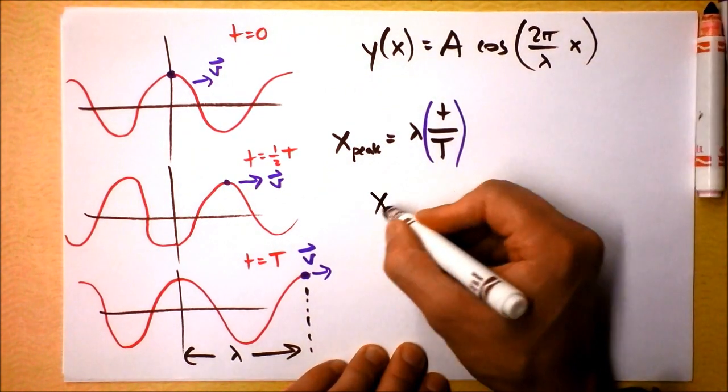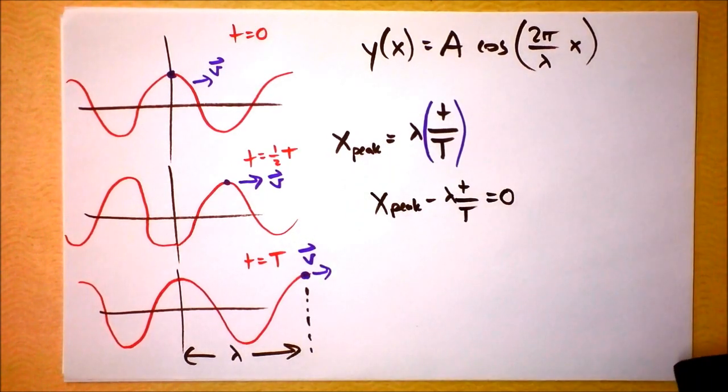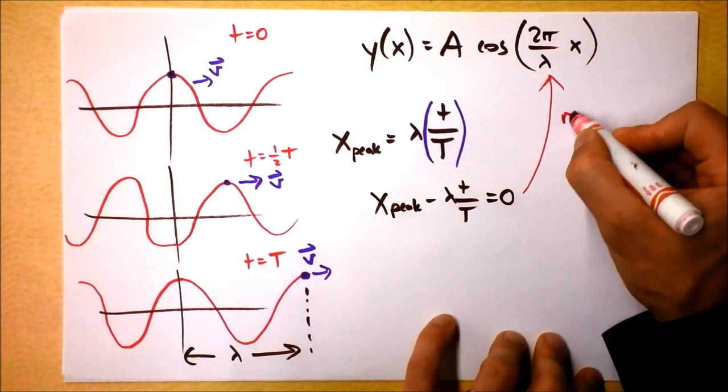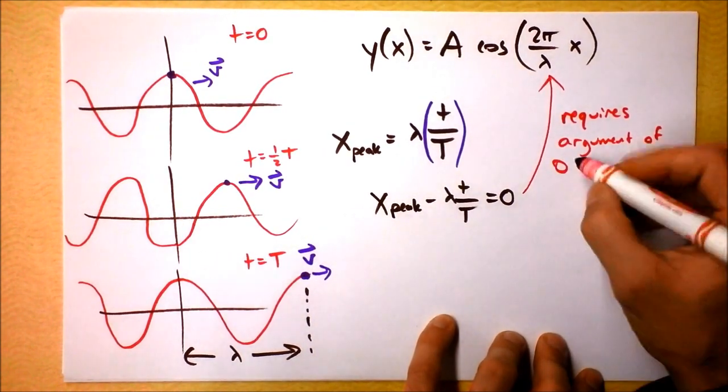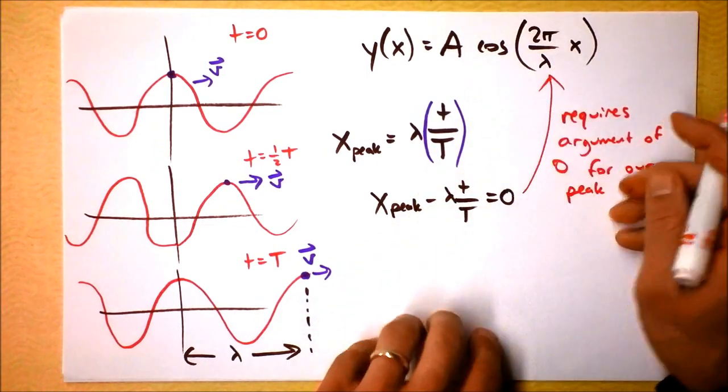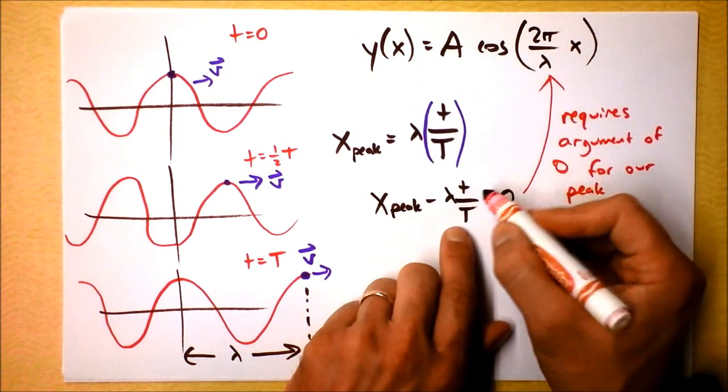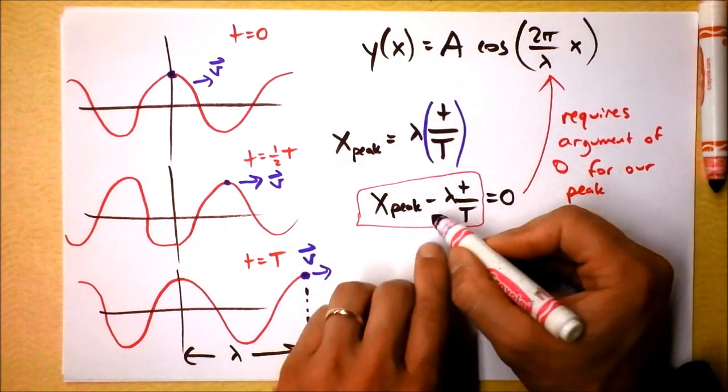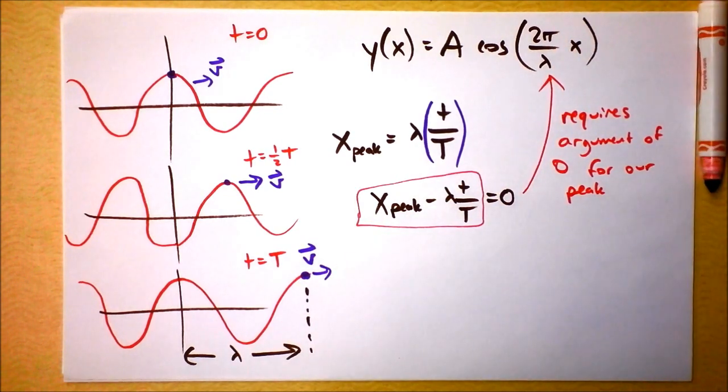We're going to say that the location of the peak minus lambda t over period equals zero. And you remember that this equation up here requires argument of zero for our peak. If we give this an equation, an argument of zero, then we'll find our particular peak. It says that y is peaked when we have a cosine of zero. So I'm going to take this stuff right here. This is one way that I can explain why I'm doing this. I'm going to take this stuff right here, and I'm going to say that I plug this in for x. If I plug this in for position, then I'll find a beautiful equation, and it's got some really interesting dependence on time.